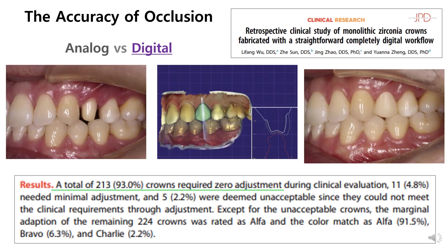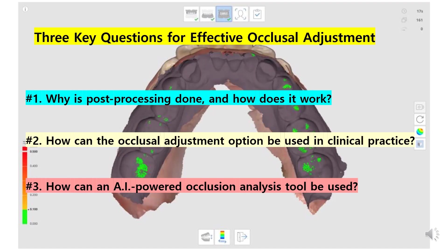This study found that in 93% of single-crown treatments using digital impressions, no occlusal adjustments were necessary. The very purpose of using digital methods is to achieve such near-perfect treatment outcomes. However, in reality, we sometimes encounter prosthetics with unexpectedly high or low occlusion in our daily practice. What are the factors that cause these occlusal discrepancies? Today, we are going to discuss in detail how to adjust occlusion for optimal use of the Medit scanner.